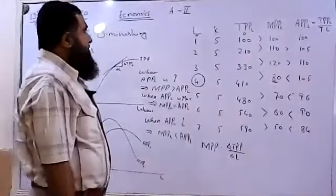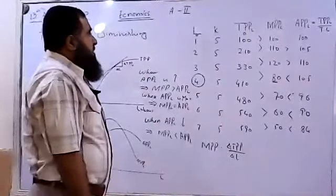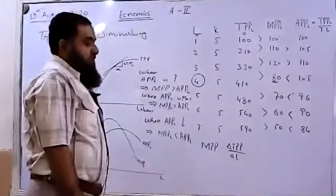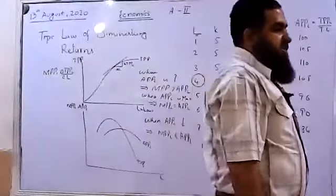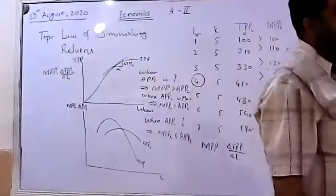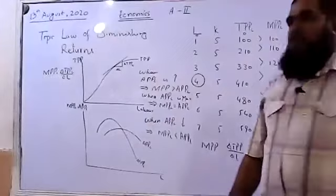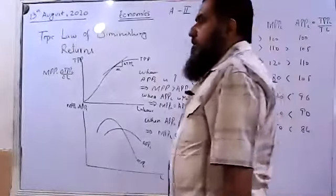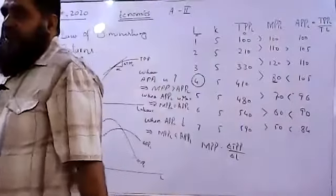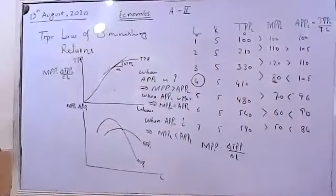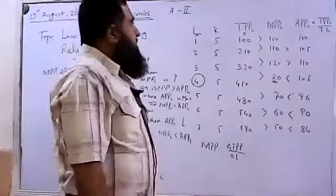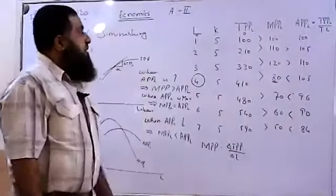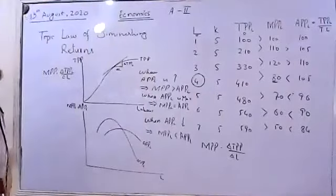We have concluded the law of diminishing returns. In our next class we will be doing the long-run production function and isoquants, then the isocost line, and will be studying further output determination using the isoquant and isocost technique of the production function. Thank you very much.